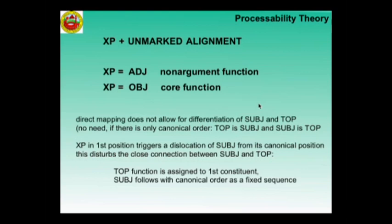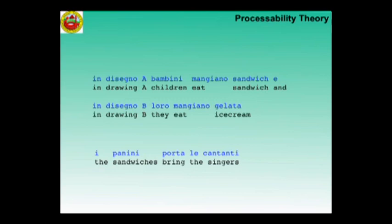So here we start by inserting a new element in the sentence at the beginning. The learner is obliged to distinguish between topic and subject. If the element in front is an adjunct — a non-argument function — Italian needs no further adjustment in the sentence. To begin with, canonical word order follows the initial element, so you have XP plus unmarked alignment, and here you have disentangled the subject from the topic, but it's still followed by a fixed order sequence.